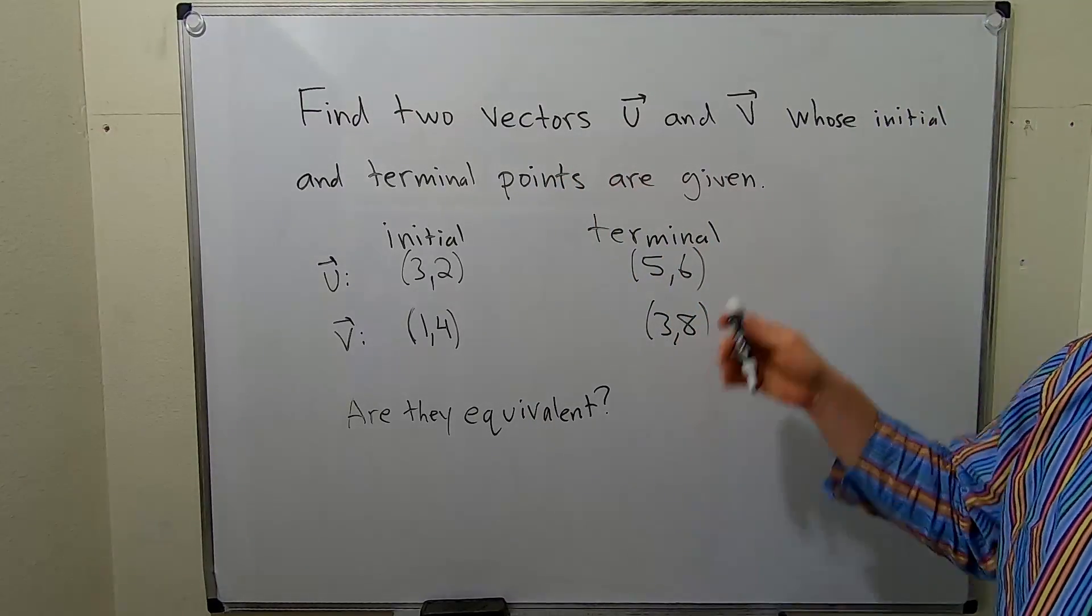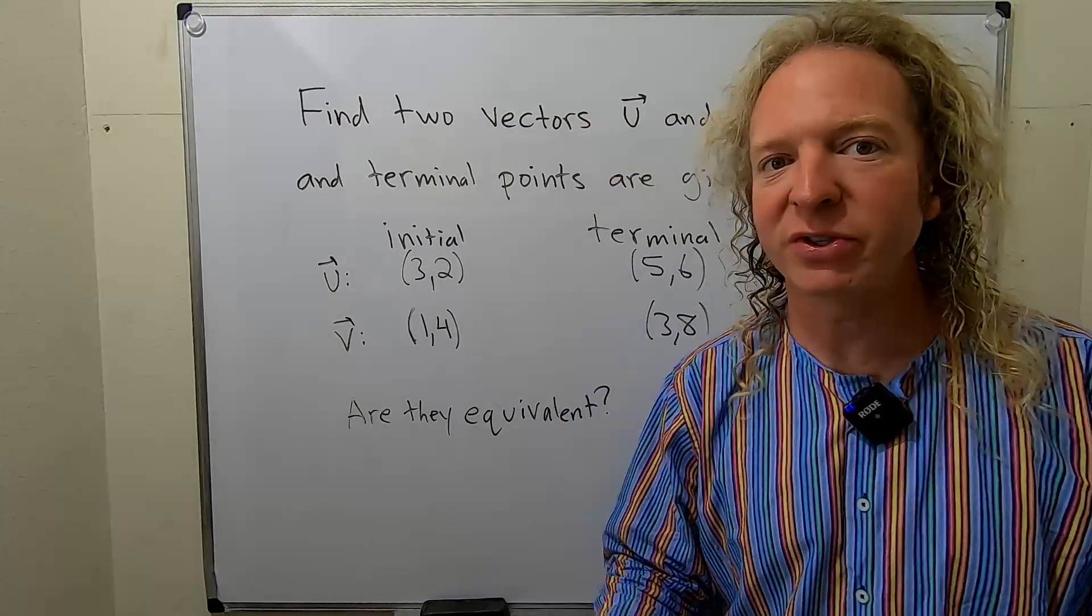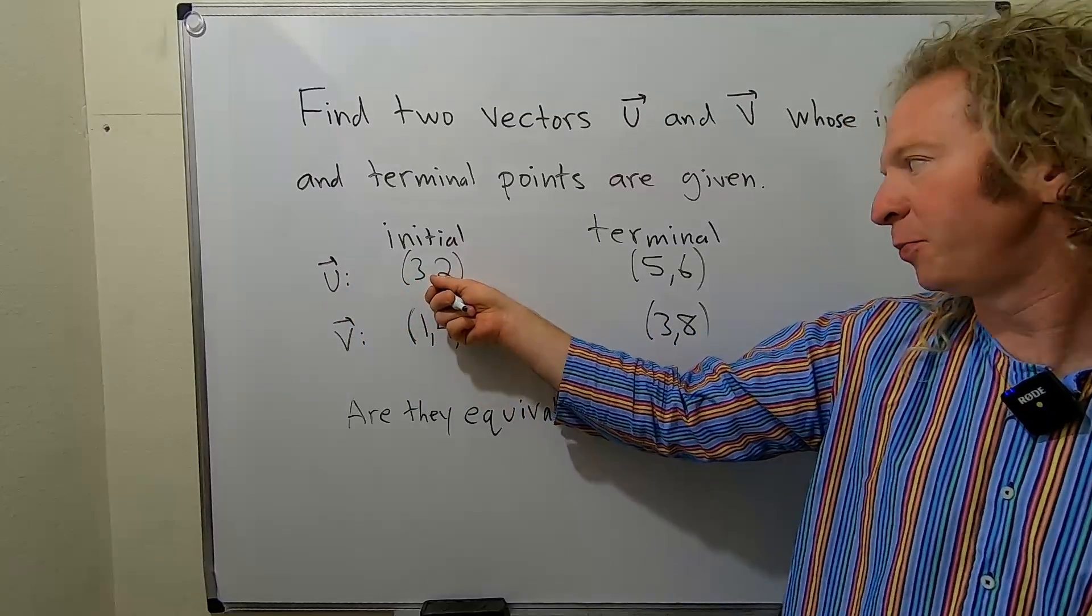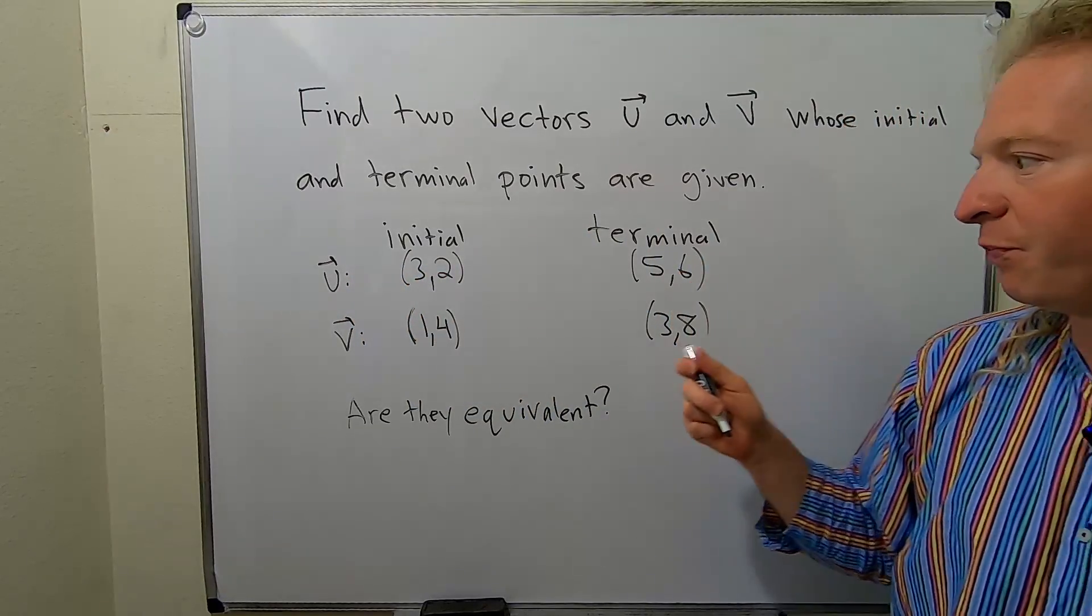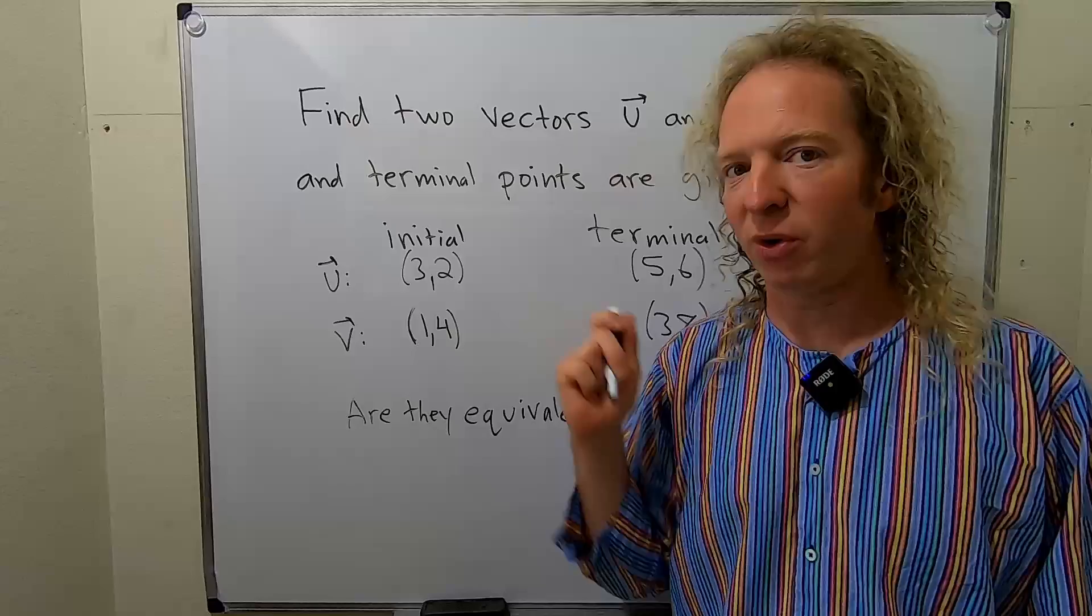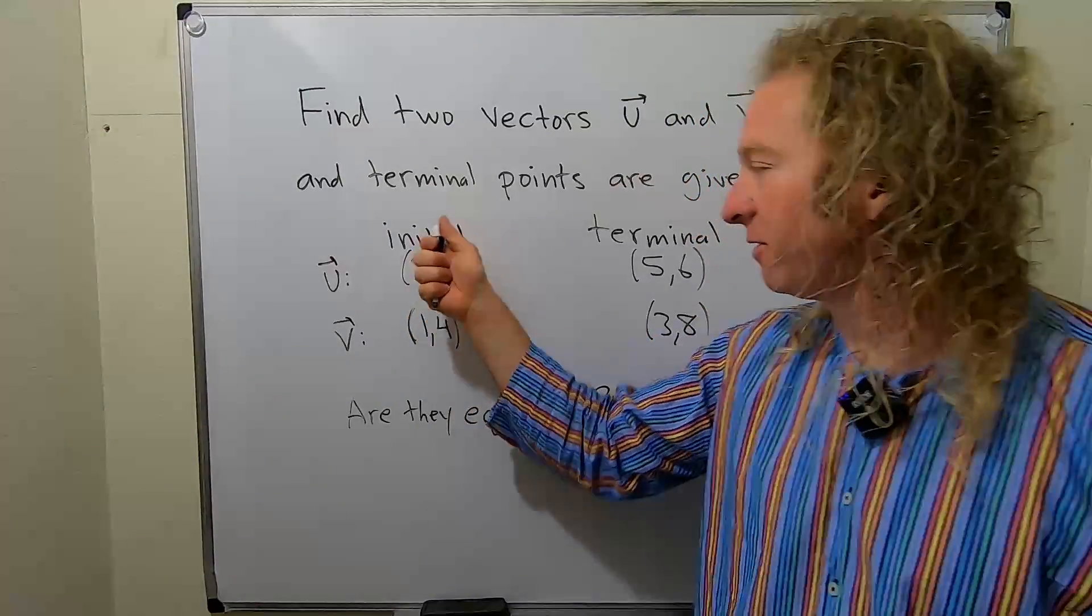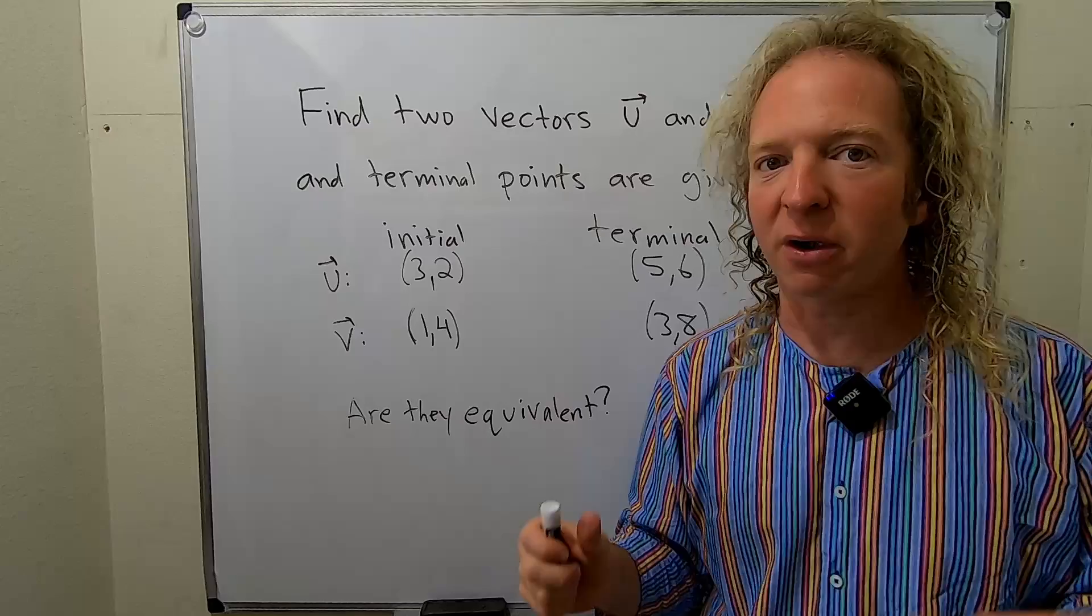Find two vectors u and v whose initial and terminal points are given. So we have the vector u with initial point (3,2) and terminal point (5,6), and the vector v with initial point (1,4) and terminal point (3,8). And we have to find the vectors and determine if they're equivalent.